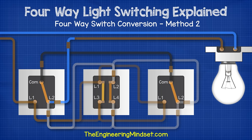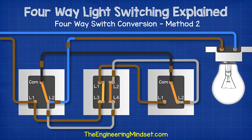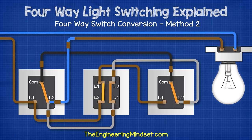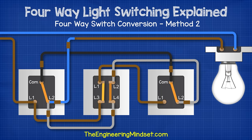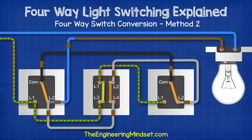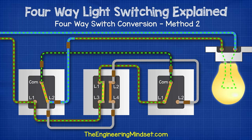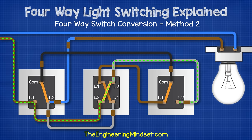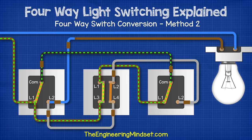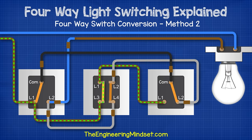The third method is a variation of the last one, using the same cables but changing their route slightly. We have the live into L1 of switch one, then a brown wire from L1 of switch one to L3 of switch two, and another brown wire from L1 of switch two to L1 of switch three. Then a gray wire from L2 of switch one to L4 of switch two, and another from L2 of switch two to L2 of switch three. We then have a black wire between the two commons, and finally the blue wire back to the lamp circuit. Flipping any switch in sequence makes or breaks the circuit.